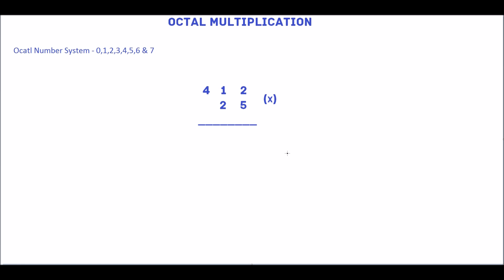First multiply 412 by 5. 5 multiplied by 2 is 10. 10 is not an octal number. We will convert this 10 into octal. Divide this 10 by 8. The quotient is 1 and the remainder is 2.